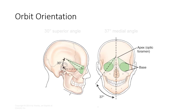This slide depicts the pathway of the optic foramen within the orbit. It's angled 30 degrees to the OML vertically and laterally at a 37 degree angle to midline. We'll revisit this information when we discuss the radiographic positioning for the optic foramen.